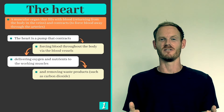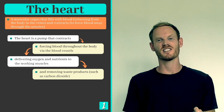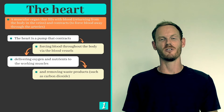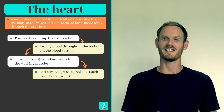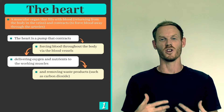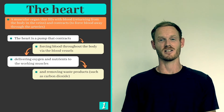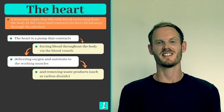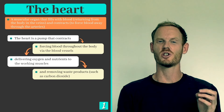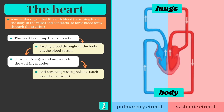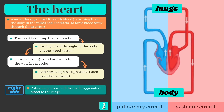But how does the heart achieve this? To answer this question we first need to study its anatomy, or the structures that it's comprised of. The heart is essentially made of two pumps, each of which forces blood through a different circuit of blood vessels.